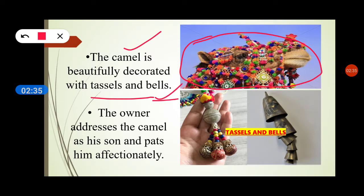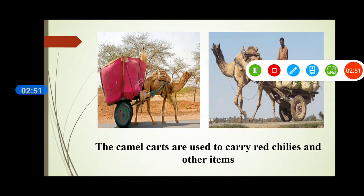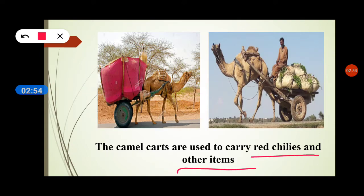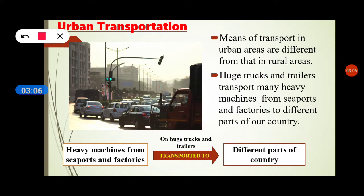The owner addresses the camel as his son and pets him affectionately. Camel carts are used to carry red chilies and other items in Rajasthan, especially in Bikaner. Urban areas, however, are different from rural areas in terms of transportation.